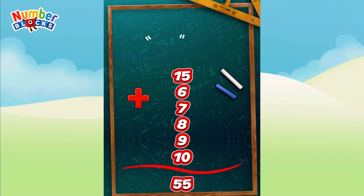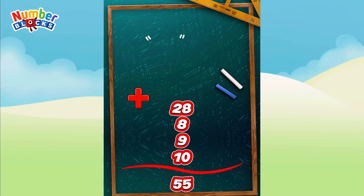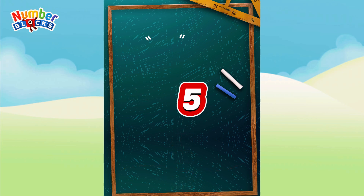15 plus 6 is equal to 21. 21 plus 7 is equal to 28. 28 plus 8 is equal to 36. 36 plus 9 is equal to 45. 45 plus 10 is equal to 55.